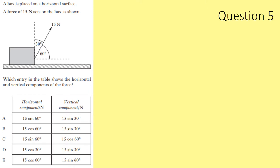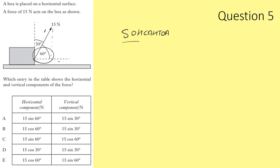Question 5. A block on a surface has 15 N acting at an angle. We need the horizontal and vertical components. The angle to the horizontal is 60°. Using SOHCAHTOA: horizontal component uses adjacent and hypotenuse, so 15 cos 60°, meaning the answer must be D or E. For the vertical component, opposite over hypotenuse gives 15 sin 60°. Answer: E.